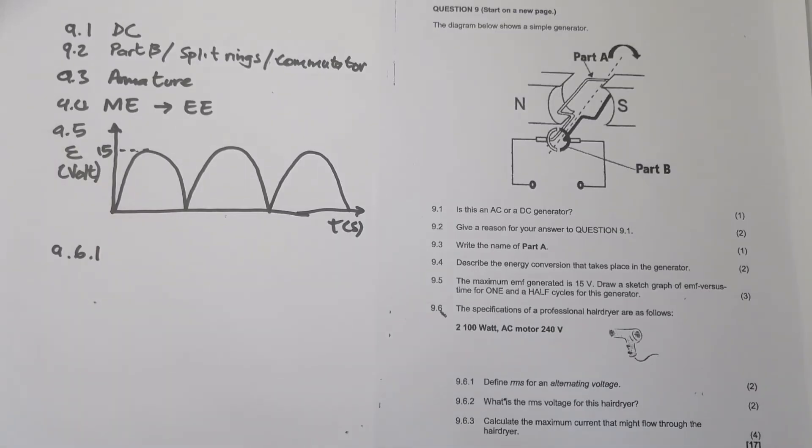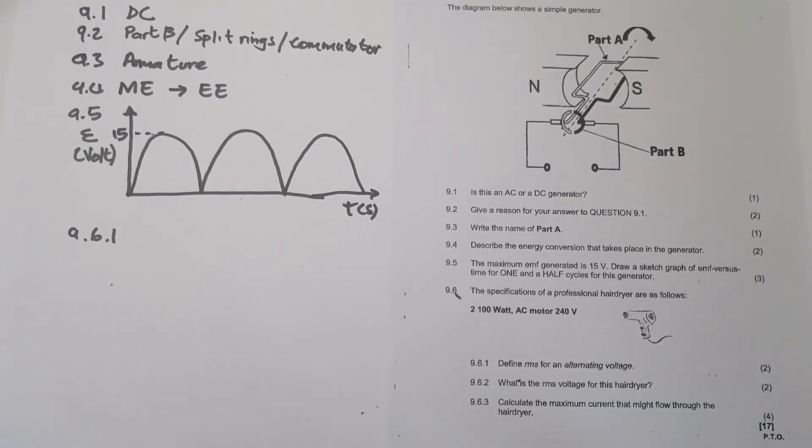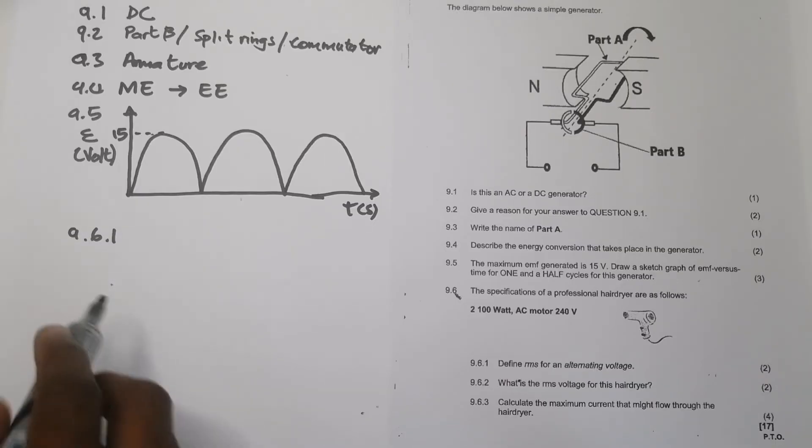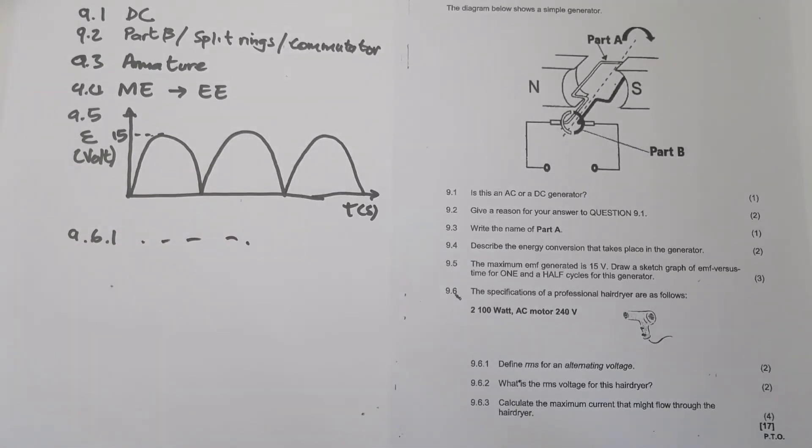So we say the RMS voltage, essentially it's the equivalent of the DC voltage source. More specifically, we say it's the DC current or potential difference which dissipates the same amount of energy as AC. So that's the definition. Remember that it's the DC equivalent of the AC power, it dissipates the same amount of energy as AC.